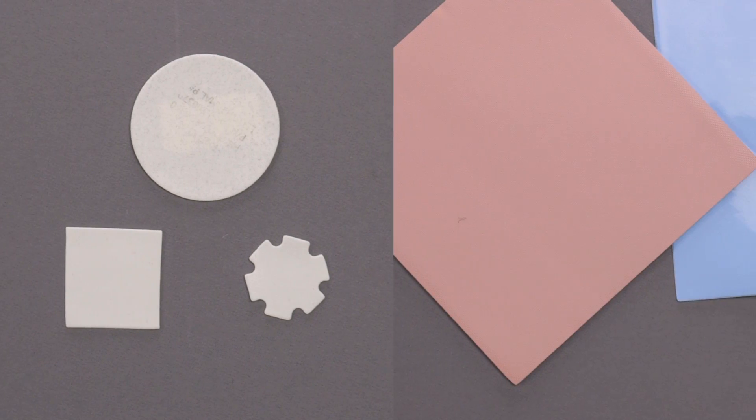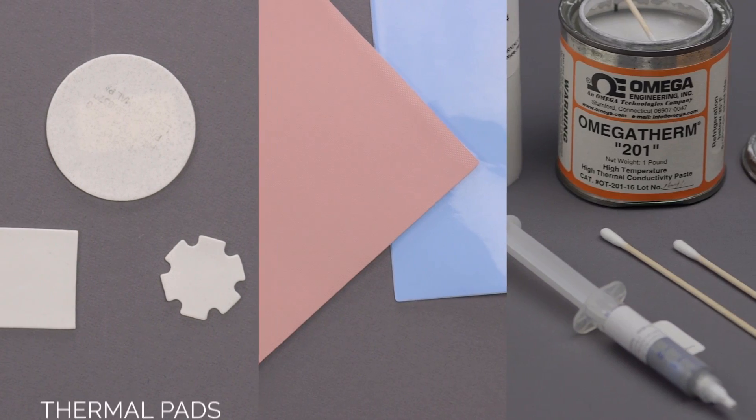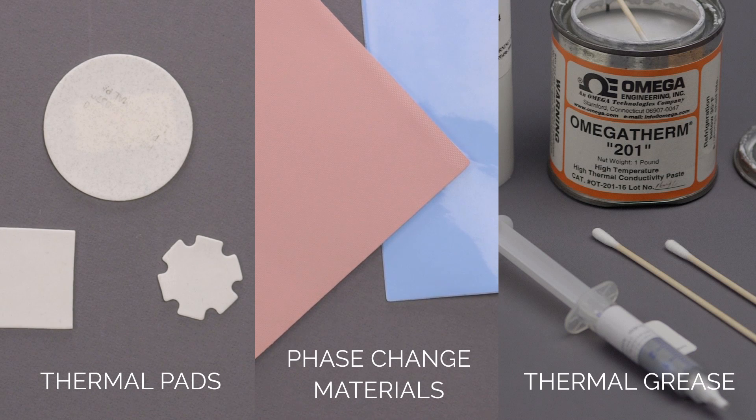There are three common styles of TIMs used with LED arrays: Thermal Pads, Phase Change Materials, and Thermal Grease.